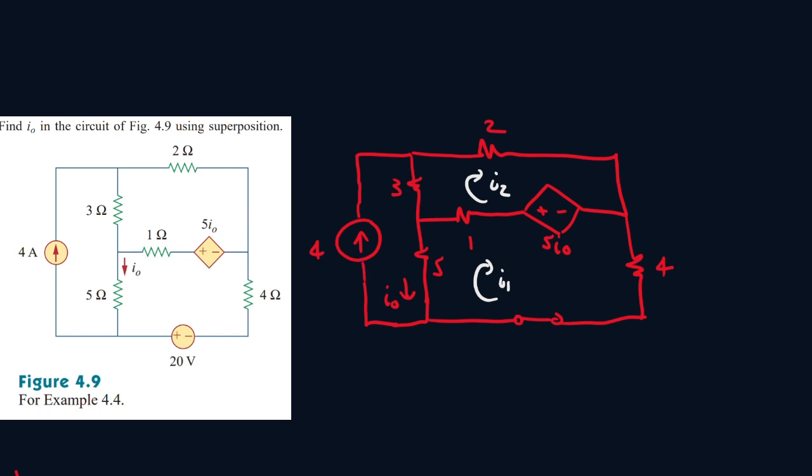and let's turn back on our current source. Alright. So now let's add another mesh. Let's call this one I3,